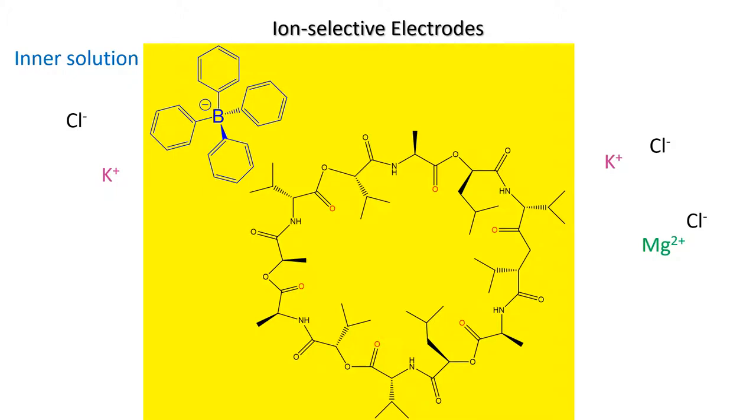Without wanting to misrepresent the structure of the membrane, obviously a membrane would contain a large number of valinomycin and a large number of tetraphenylboron ions. What I am demonstrating here is the mechanism by which ions can enter into the membrane and also what causes the potential difference to develop. Here I've shown a magnesium ion being rejected by the membrane. It's a poor fit with the valinomycin, so it doesn't find its way into the membrane and it doesn't permeate through to the other side.